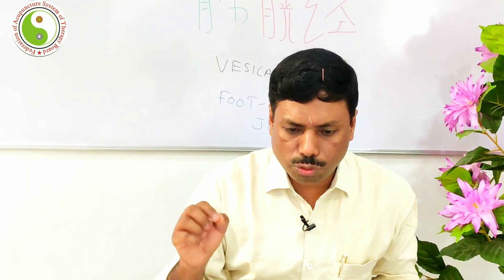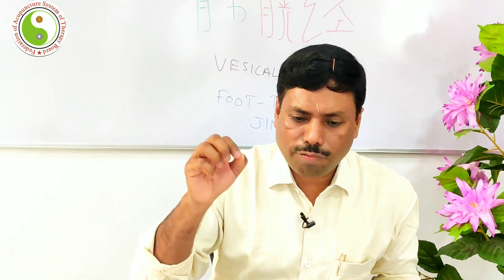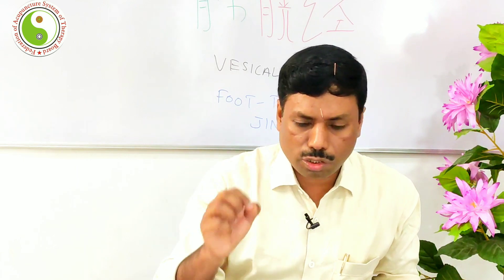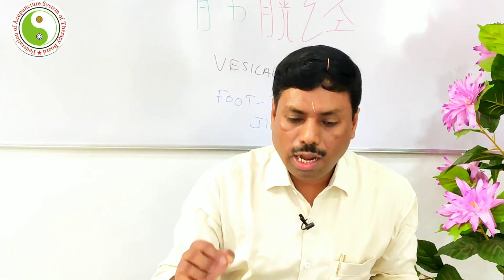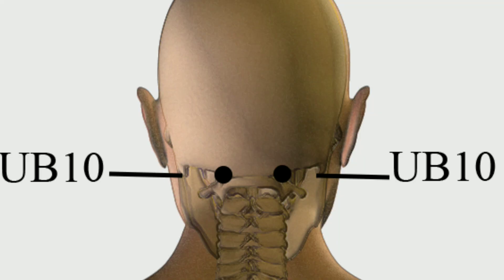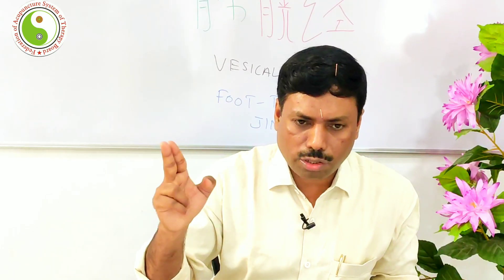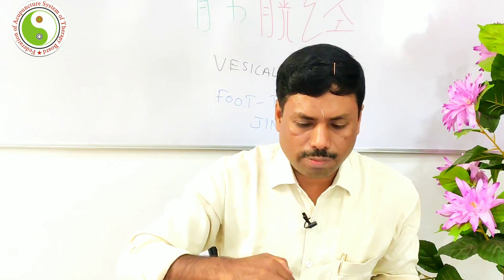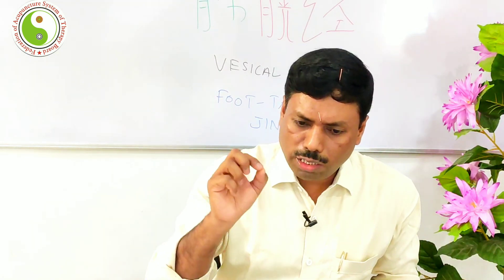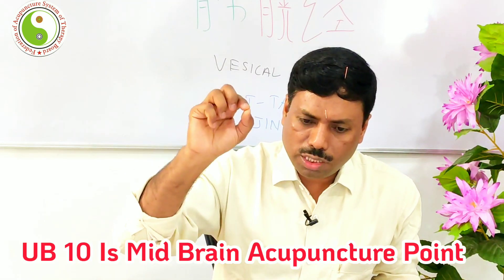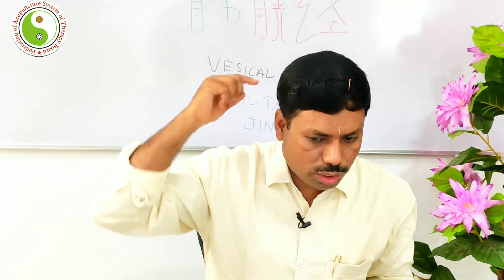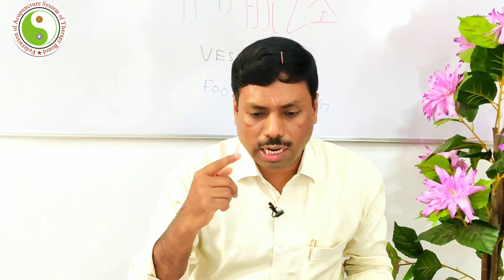UB9 Yuzhen is a really functioning point for the pons. UB10 is Tianzhu, located 1.3 cun lateral to the posterior midline and 0.5 cun above the posterior hairline.